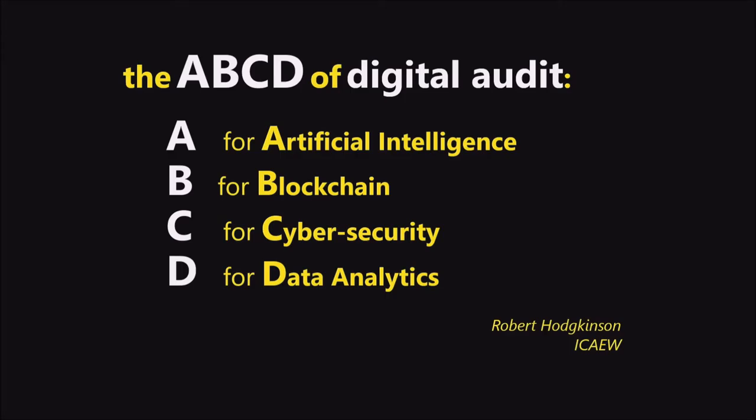So, the ABCD of digital audit. We coined that term. It's a bit of marketing — I saw it at a conference and I'm now reusing this slide at all my conferences. The ABCD of digital audit is: A for artificial intelligence, B for blockchain, C for cybersecurity, and D for data analytics. That gives you already the idea of what we are talking about.